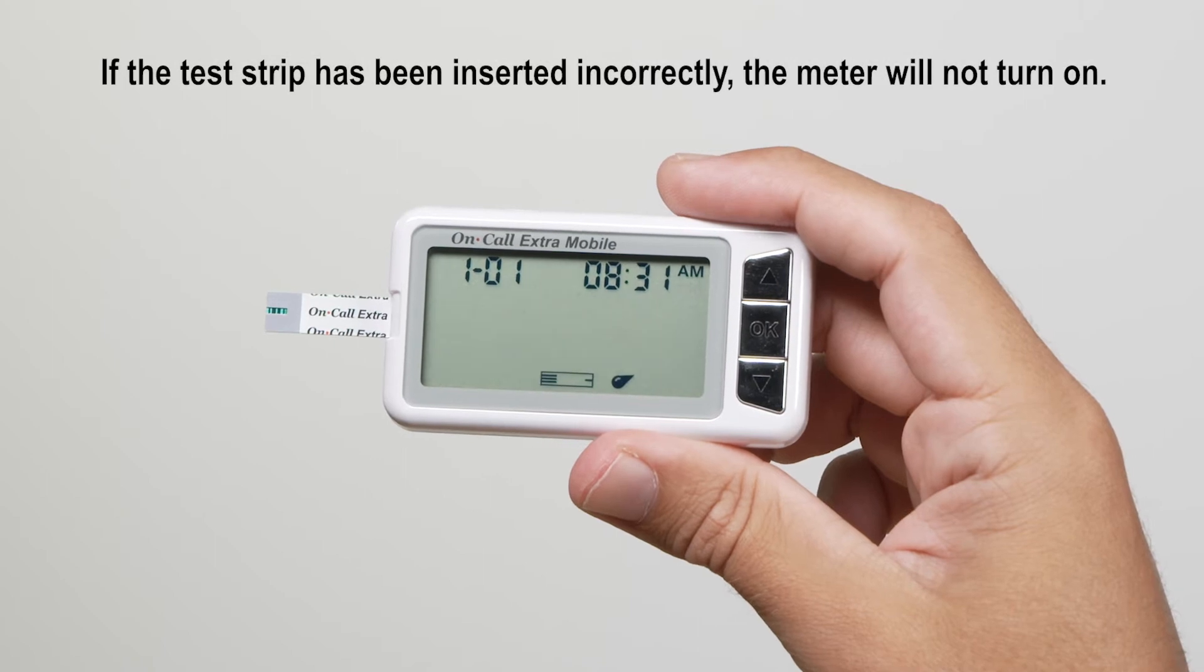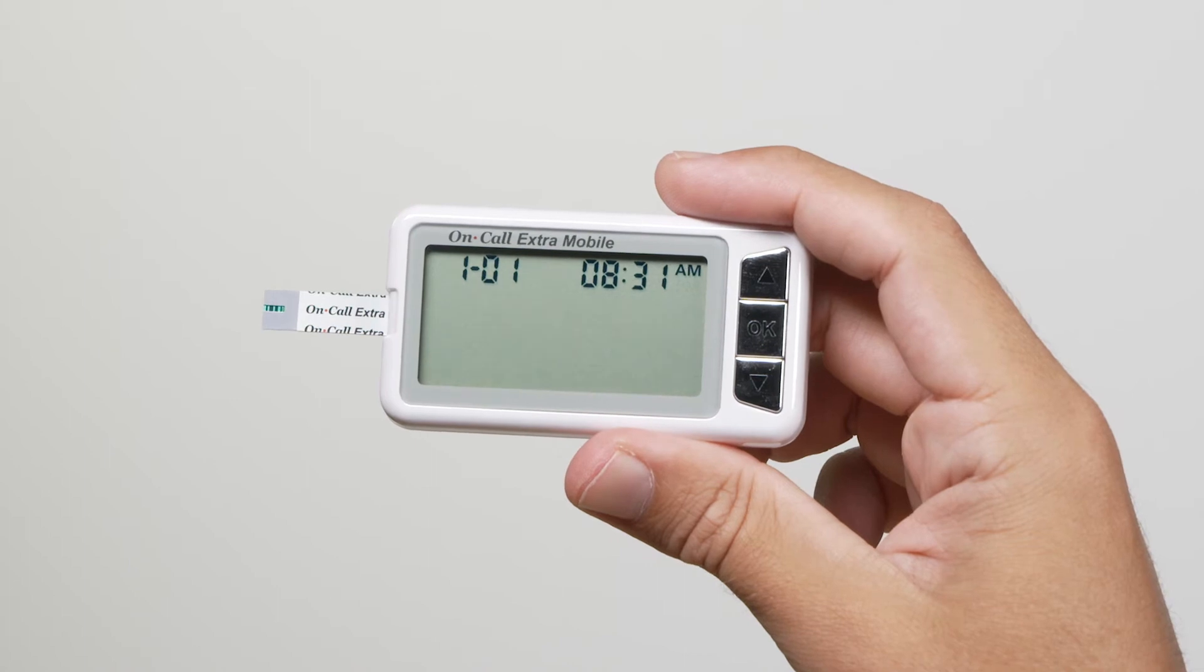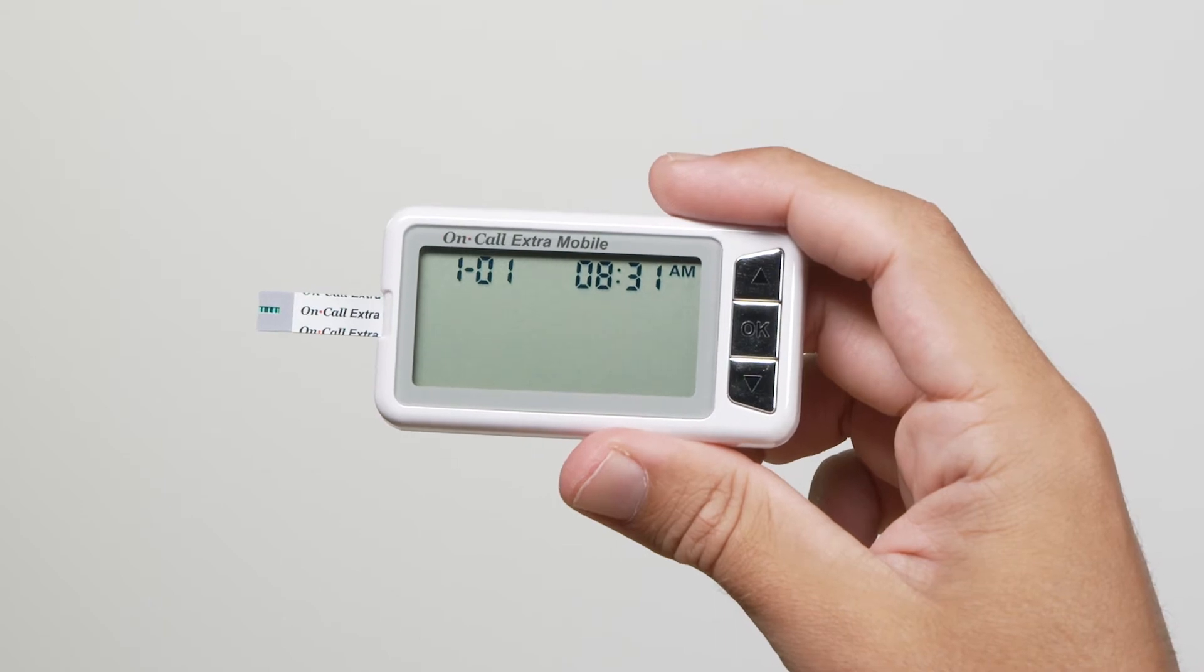Following this display check, the system will enter the test mode. The display will show the date and time and the strip icon with the blood sample icon blinking to indicate that the test strip is inserted correctly and that a drop of blood can be added.